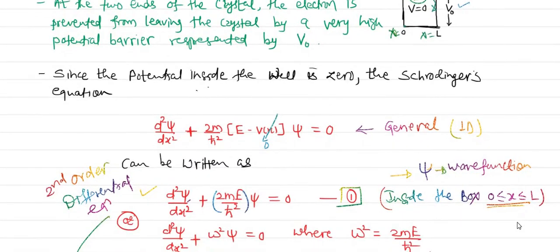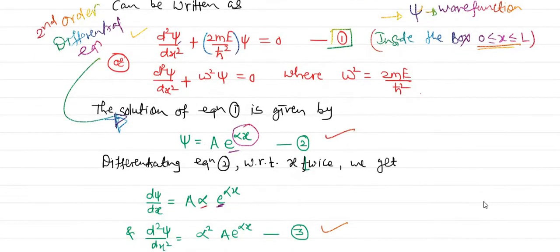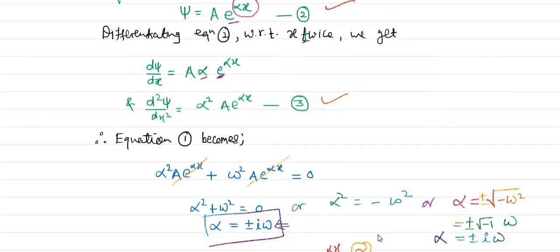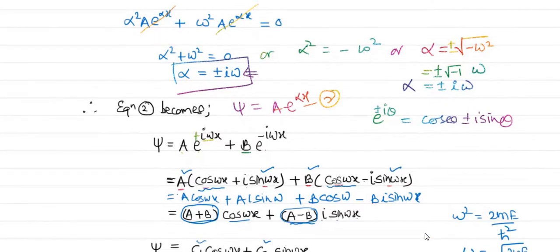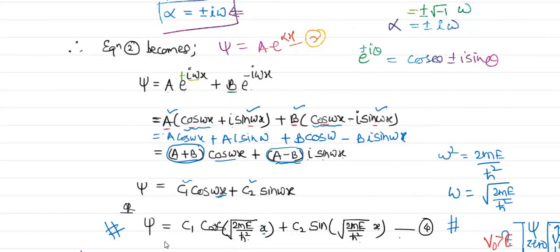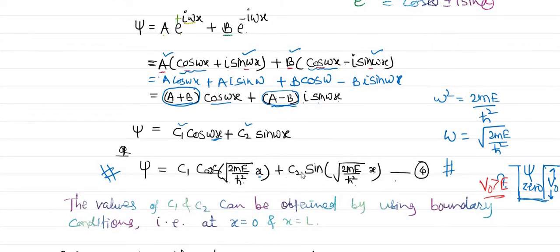By applying the condition that inside the box the potential is zero, we reach the Schrödinger equation in simple form. We took one solution and by resubstituting it into the Schrödinger equation we got two different roots — one for +iω and one for −iω. After substituting those roots, the final solution to the Schrödinger equation when the particle is present in the box within 0 ≤ x ≤ L gave us our wave function.